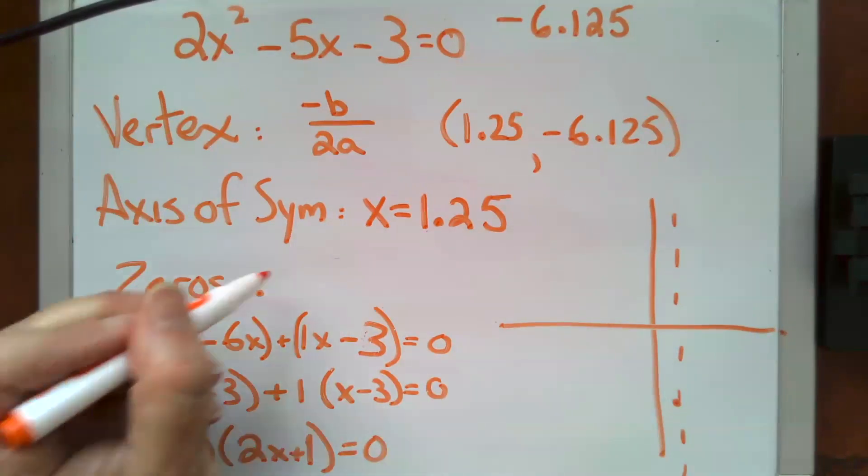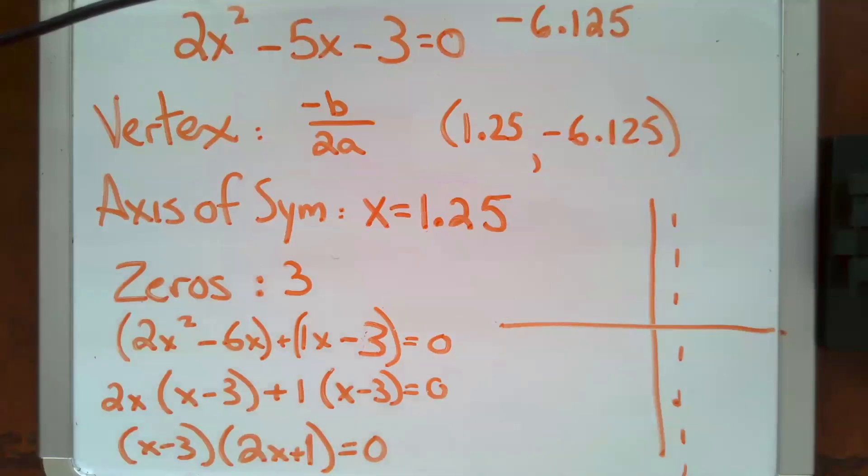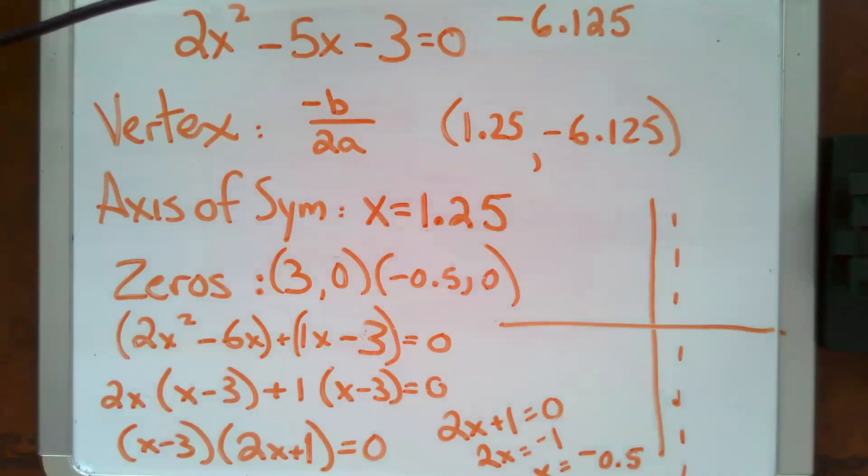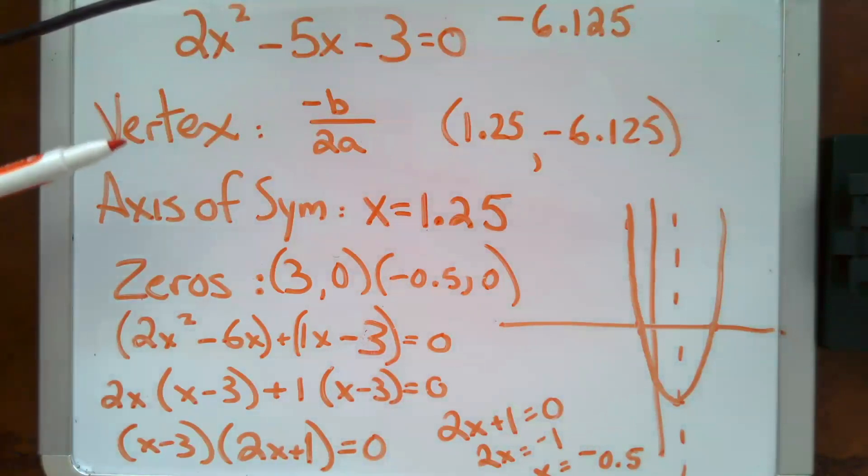Which means one of my zeros is 3. And then by setting this equal to 0 and solving, you'll find that my other zero is negative 0.5. And there I can make a rough plot. So one of my zeros is over 3 up 0. My other one is negative 0.5. And so that's a rough sketch of my parabola. And I've answered all three questions. What's my vertex? What's my axis of symmetry? And what are my zeros?